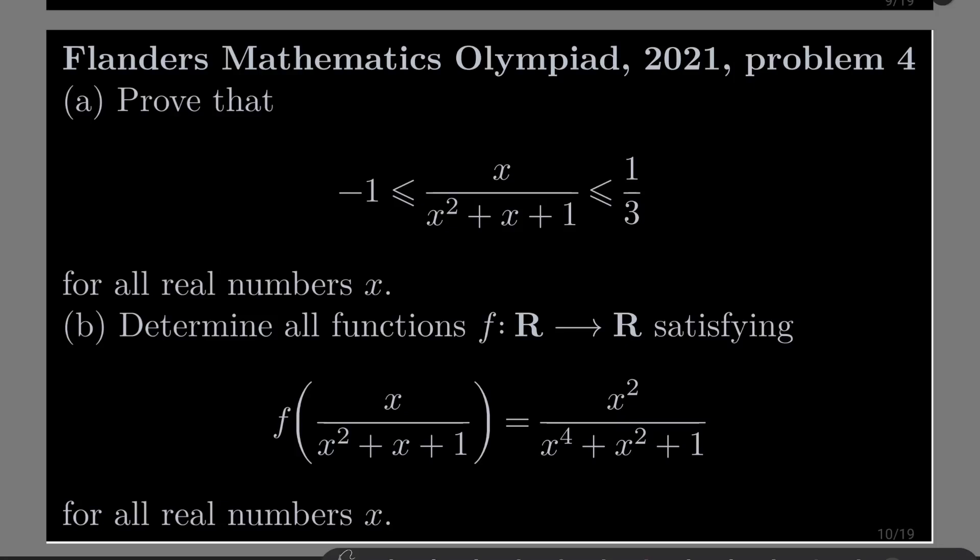Hello friends, in this video I'd like to solve the following problem from the Flanders Mathematics Olympiad 2021, problem number 4. It has two parts. Part A: Prove that x over x squared plus x plus 1 is greater than or equal minus 1 and less than or equal 1 third for all real numbers x.